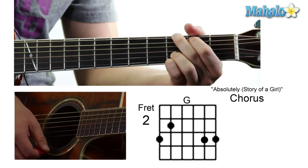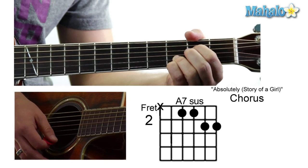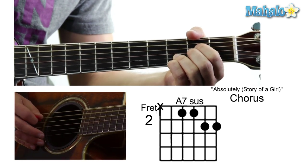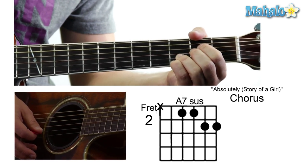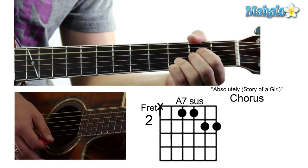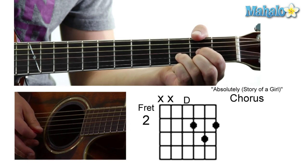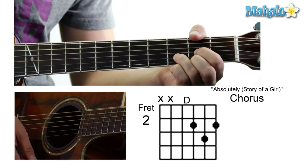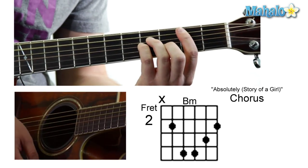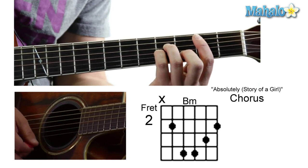C sus to the G, then an A7 sus — or we can do just an A sus — and that's going to be muted: zero, two, two, three, three. To a D, muted: zero, zero, two, three, two. To a B minor — looks so sad — muted: two, four, four, three, two.